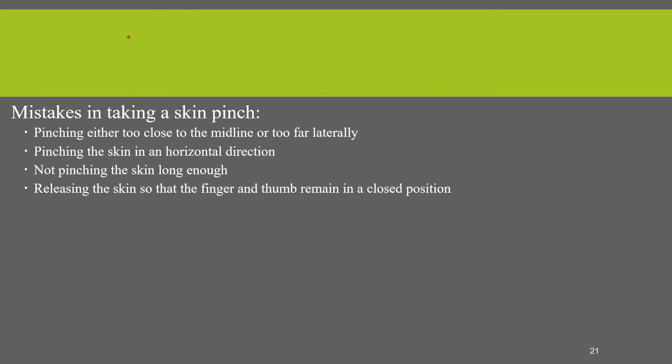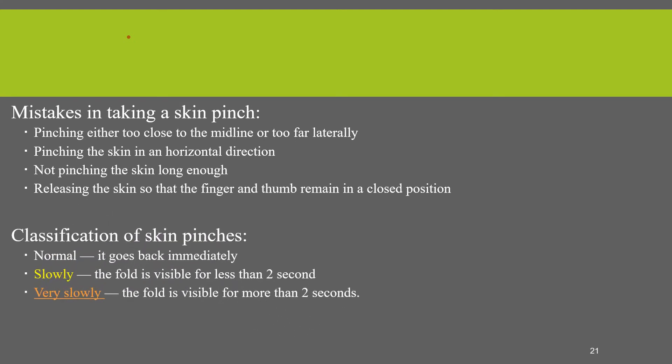When we pinch the skin, common mistakes include pinching either too close to the midline or too far laterally, or pinching the skin in a horizontal direction. We should classify the skin pinch vertically, not pinching long enough, and also releasing the skin so that the finger and thumb remain in the closest position. Normally the skin goes back immediately; we say slow skin pinch when the fold is visible for less than two seconds, and very slow if the fold is visible for more than two seconds.